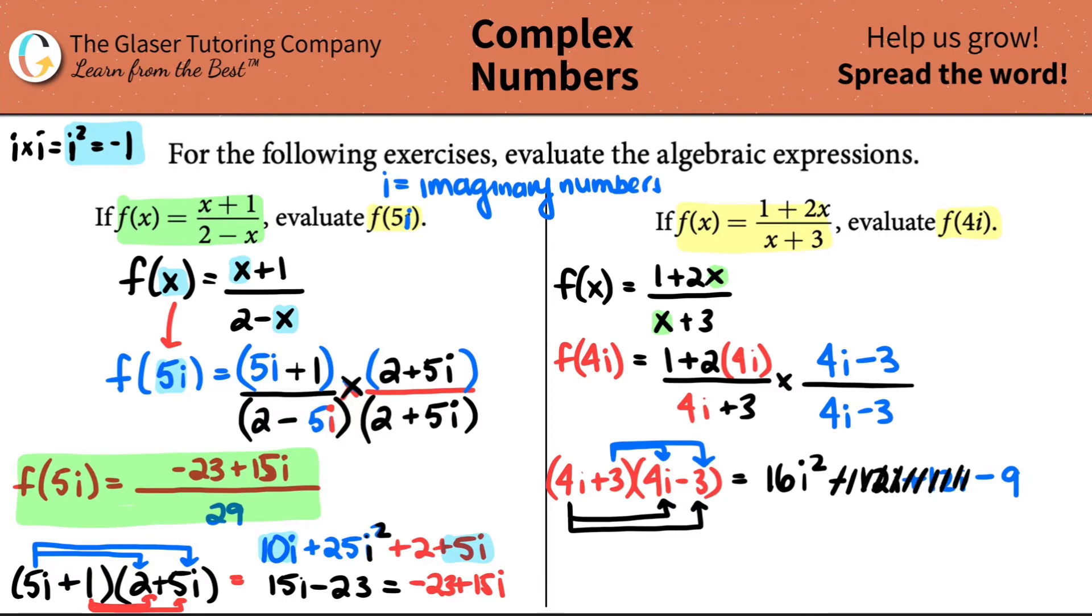And remember, i squared is a negative 1. So this would be 16 times a negative 1 minus 9. This would equal negative 16 minus 9. Negative 16 minus 9 is 25. So that's the bottom. So the bottom would equal a negative 25.